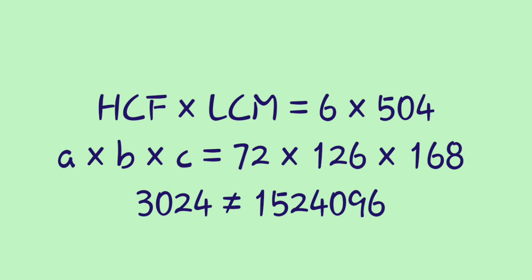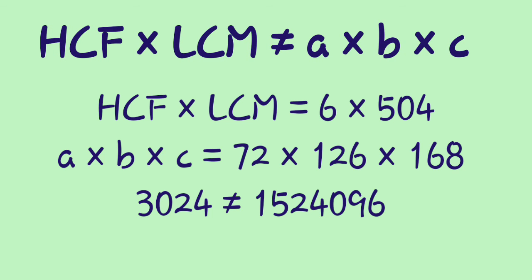Next, we verify whether the previous relation HCF × LCM = A × B holds for three numbers. Here HCF × LCM = 6 × 504 = 3024, but A × B × C = 72 × 126 × 168, which is not equal to 3024. So the relation HCF × LCM = A × B × C is not true in the case of three numbers.